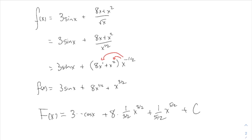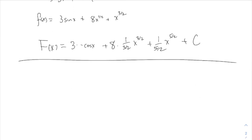I want to do two problems demonstrating the importance of the plus C. In all the examples so far, the plus C doesn't matter much, but it's a fact that when you take the antiderivative, there are actually many possible antiderivatives. The one with plus C is called the general antiderivative, but there are particular antiderivatives with specific values for the constant. In the real world, you usually want one specific particular antiderivative.